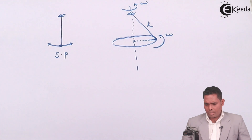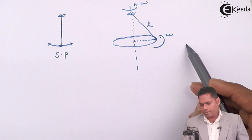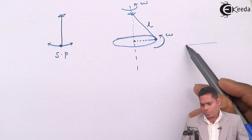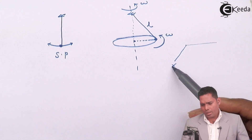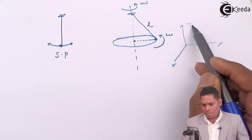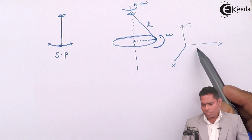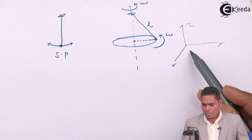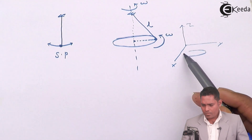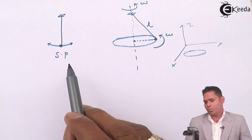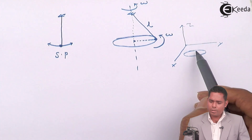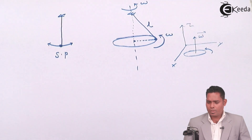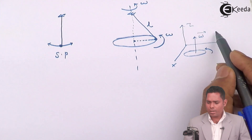Let me set up coordinates: this is x, this is y, and this is the z-axis. The pendulum bob is actually moving in a horizontal circle in the x-y plane. The direction of omega, using the right-hand rule, if the motion is anticlockwise then omega points in the direction of the k-hat vector, i.e., along the z-axis. The angular speed is constant.